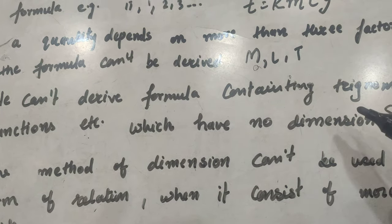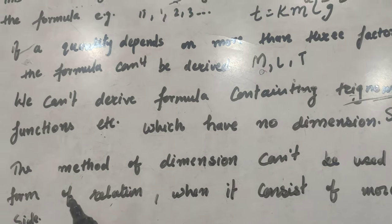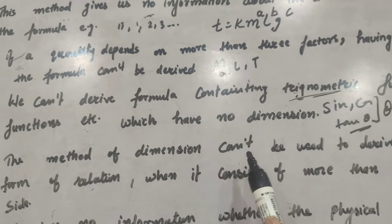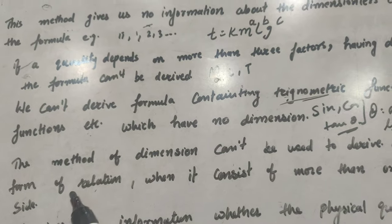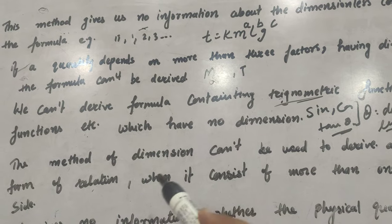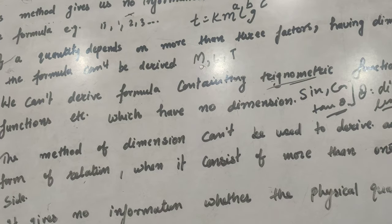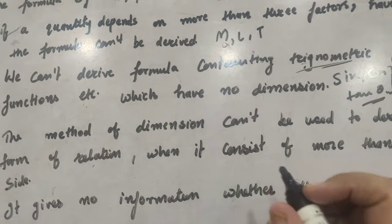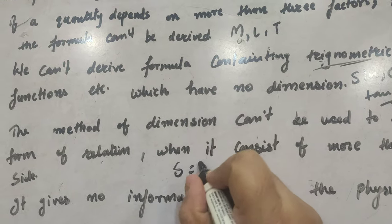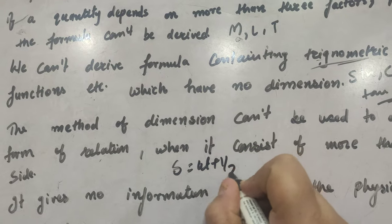Next is, the method of dimensions cannot be used to derive any form of relation when it consists of more than one term on any side. For example, if we talk about s equals ut plus half at squared. Now,